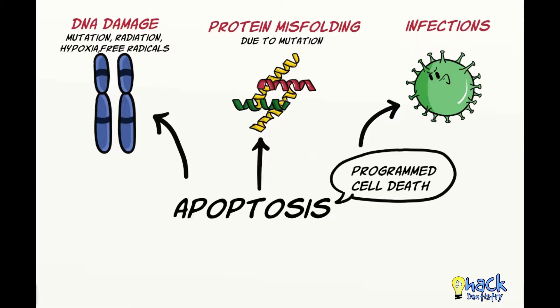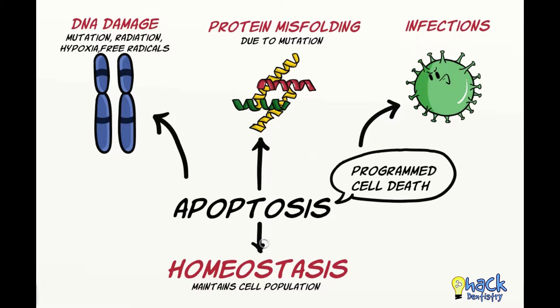Apart from pathologic factors inducing programmed cell death, apoptosis is also a homeostatic mechanism where cells that are not needed are killed, thereby maintaining a steady-state population of cells.